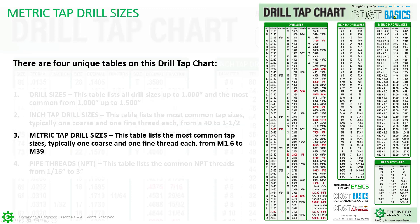The third table is the metric tap drill sizes — labeled 'metric' up at top. Again, this table is going to be the most common tap sizes, typically one coarse and one fine thread for each, ranging from an M1.6 all the way up to an M39.